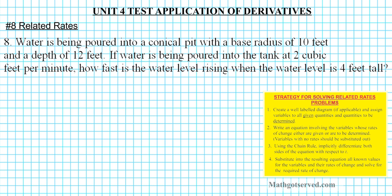Alright, so we have our little guide here on the right for reference and we're going to apply it to problem number 8. So it reads, water is being poured into a conical pit with a base radius of 10 feet and a depth of 12 feet. If water is being poured into the tank at 2 cubic feet per minute, how fast is the water level rising when the water level is 4 feet tall?